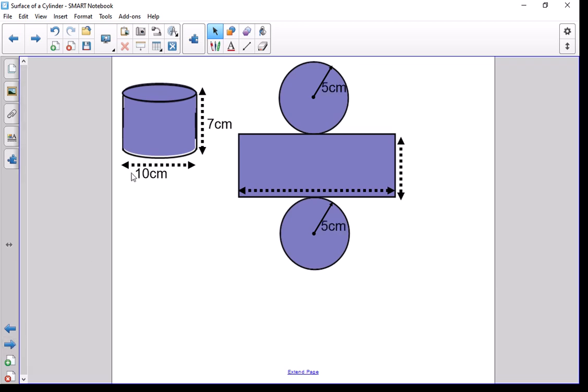Now let's just start off with the circles of our net. They have a radius of 5 because that would be half of the diameter. The height of the rectangle would be 7 centimeters because that would match the height of the cylinder. The length of the rectangle needs to match the distance around the circle which is why it's pi times the diameter.